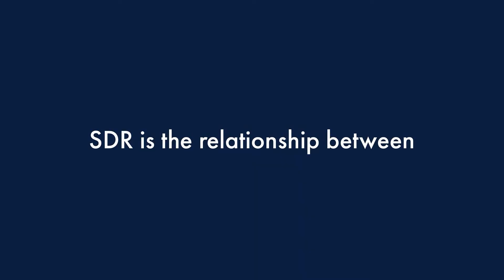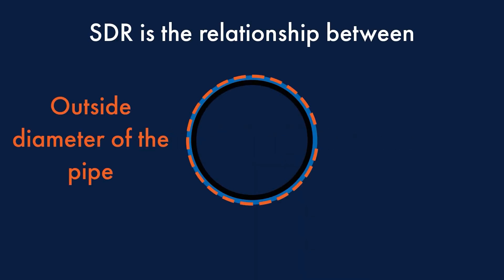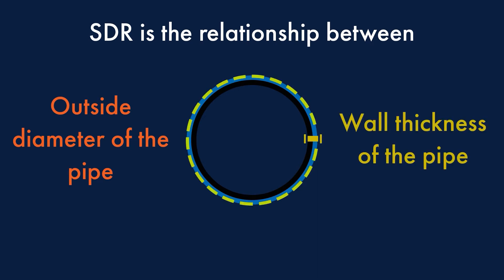This leads us on naturally to talk about SDR. SDR is the relationship between the outside diameter of the pipe and the wall thickness of the pipe. It's called the Standard Dimensional Ratio.